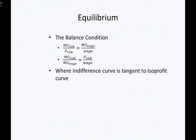We've talked about this when we thought of marginal revenue product of labor divided by the price of labor, and then the marginal revenue product of capital divided by the price of capital in a prior segment — we try to reach this balance condition. When we know that balance condition, it leads to profit maximization. So it's a profit-maximizing condition.